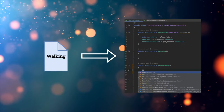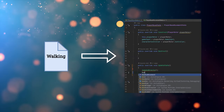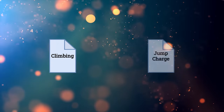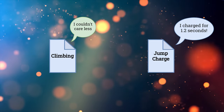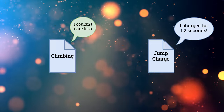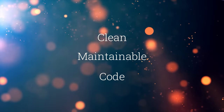Each state's code focuses solely on its unique purpose. While working on one state, you can completely disregard what other states are doing or what resources they might rely on. The climbing state doesn't need to know how long you charged up your superjump, for example. This architecture forces clean, maintainable code. Setting up a state machine-based movement system requires a little more initial effort, but it pays off immensely in the long run.